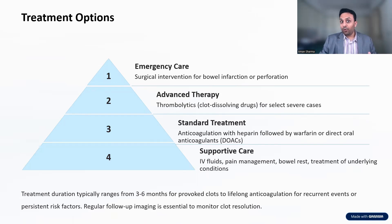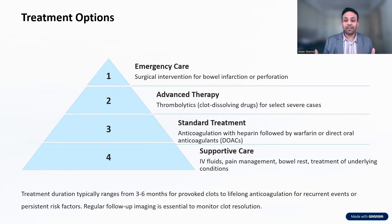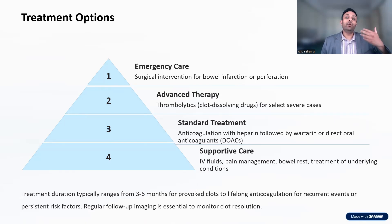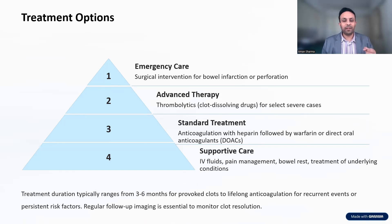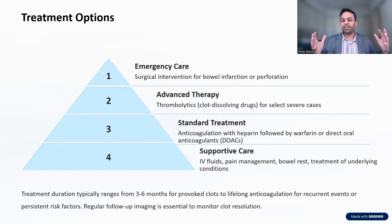Treatment options: if we've diagnosed someone with bowel vein thrombosis, and it's an acute condition, surgeons are the ones who need to be involved. If there is a bowel infarction — the discolored bowel you saw in the image — or if it's already perforated, that warrants surgical exploration and further surgical treatment. Once you have gone over the acute phase, people with severe clots in their veins may need medications to dissolve them. Standard treatment involves medications to prevent further clot formation — whether they need warfarin, apixaban, rivaroxaban, and so forth. Supportive care includes IV fluids, painkillers, and rest.